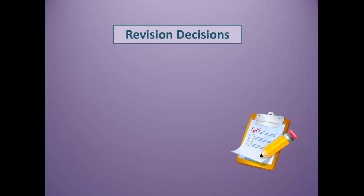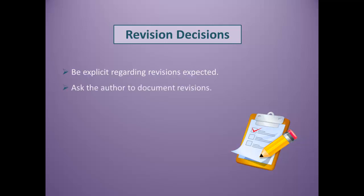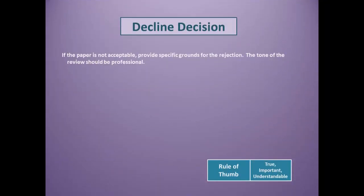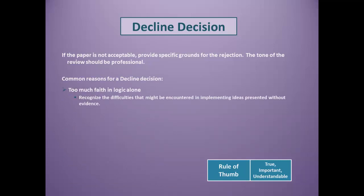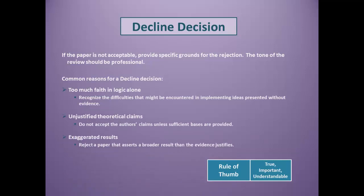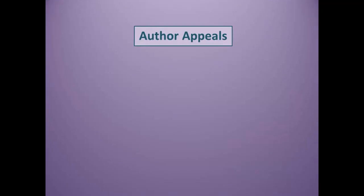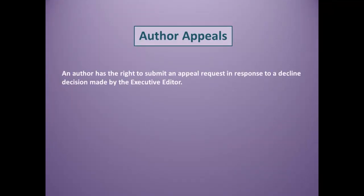If you are recommending that a paper be revised, be explicit about the revisions you expect from the author. The author will be required to document any revisions, and the review committee will verify that all required revisions have been made before proceeding further. Should you decide that a paper is not acceptable for publication, provide specific grounds for the rejection. Common reasons for a declined decision include presenting ideas without evidence, unjustified theoretical claims, exaggerated results, lack of importance for the audience, and content that is too commercial in nature.